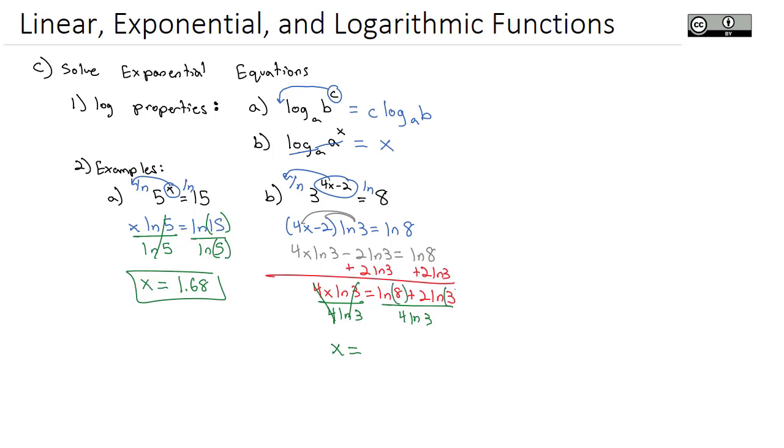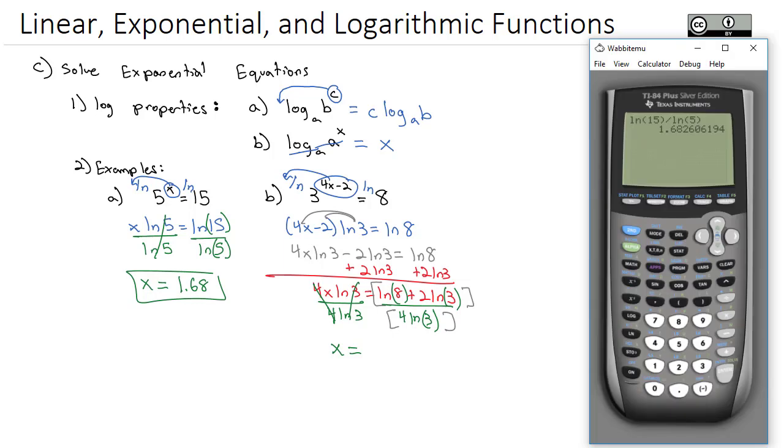As before, be careful, every natural log needs to be in parentheses, but in addition to that, we need an extra set of parentheses around the numerator and the denominator, because there's multiple things going on in both. So open a parentheses for the numerator, natural log of 8 plus 2 times the natural log of 3. Close the parentheses on the numerator, divided by parentheses for the denominator, 4 natural log of 3. Close the parentheses on the log, close the parentheses on the 4, and I get my solution for x is 0.973.